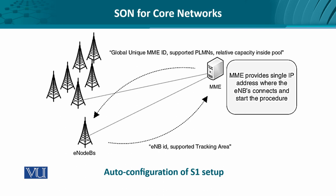The eNodeBs, which are numerous, would automatically using SON provide their information — like their own IDs and the coverage in terms of cells and the tracking area — to the mobility management entity. The mobility management entity provides an IP address to the eNodeB through which an entire process can be initiated. And upon successful configuration, it returns a unique MME ID, the P elements supported through the MME, and the capacity being provisioned to this eNodeB relative to the other eNodeBs. This is a simple mechanism of auto configuration with the core entity.